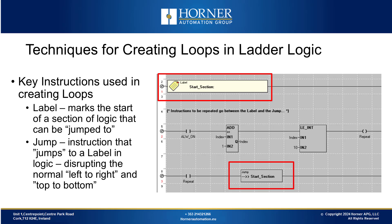Now let's look at some key instructions needed when creating both for and while loops. First, we will look at the label instruction, which can be seen at the top of this ladder screenshot. Labels can be used to label sections of your logic or to mark a section in your program you want to be able to jump forward and back to. We also have the jump instruction, highlighted in the bottom of our screenshot. When executed, the jump instruction causes the program to jump either forward or backward to a specific label. In our screenshot, we are jumping backwards.